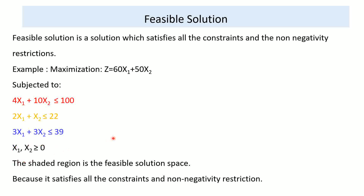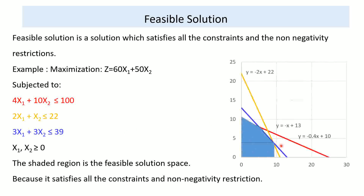Let us see this graphically. The solution for this linear programming example shows a shaded region. The shaded region satisfies all the constraints as well as the non-negativity restrictions. This shaded region is a feasible solution space, and we can draw an optimal solution from this feasible solution space. The feasible solution space satisfies all the constraints and the non-negativity restrictions.